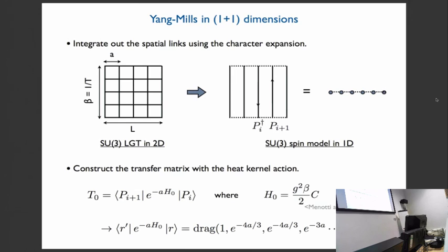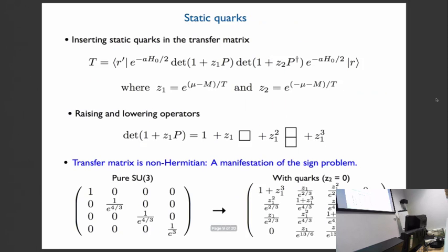On the lattice, there are many choices for the action, but here we choose the so-called heat kernel action, because this transfer matrix becomes diagonal in the basis of the representation of character R. Here we choose G squared beta over two to be one. In this case, this one is the trivial representation, and this one is the fundamental representation, anti-symmetric representation, and the adjoint representation, and so on. And if you look at these numbers, four-thirds, four-thirds, three, those are the string tension. So it's just higher representations are exponentially suppressed.